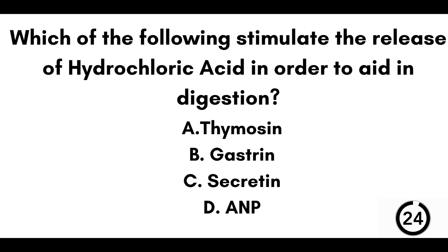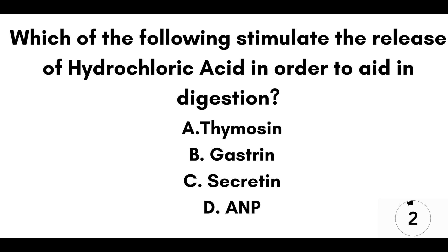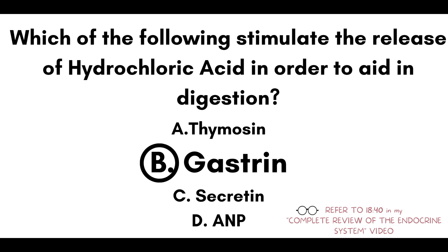Question number fifteen: which of the following stimulates the release of hydrochloric acid in order to aid in digestion? A) Thymocin. B) Gastrin. C) Secretin. Or D) ANP — atrial natriuretic peptide. Our answer here is B, gastrin.